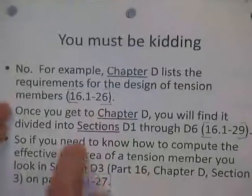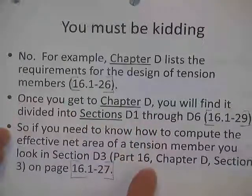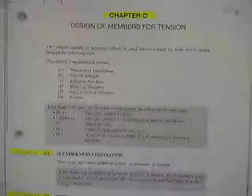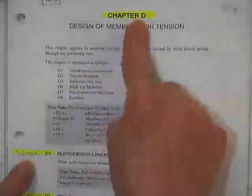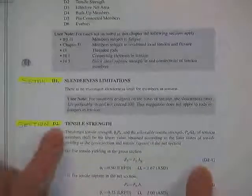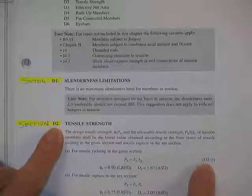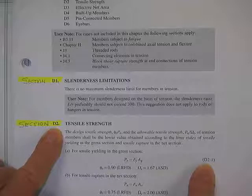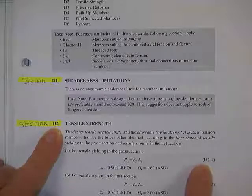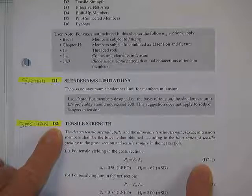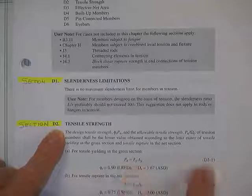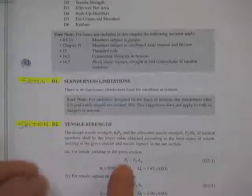Chapter D lists requirements for design of tension members. Once you get to chapter D, there's subsections, and underneath there, there's more subsections. There is chapter D. This is section D1, and this is equation. See how it's inside of D2, and it's the first equation? They'll say, go see equation D2-1.